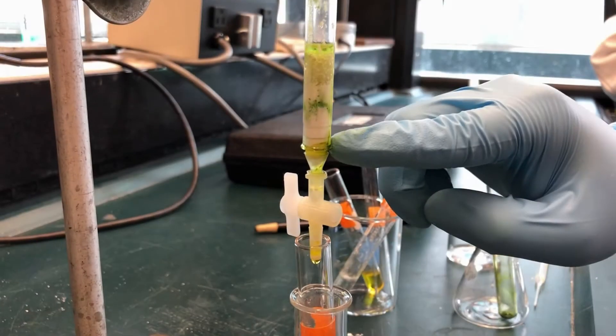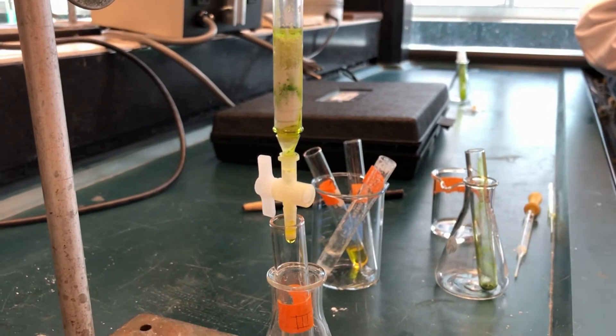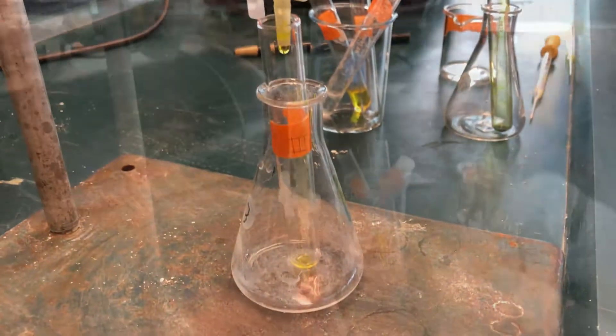Here you can see our green band is moving down. Once the green band is almost at the bottom, switch to test tube 4 to collect the green pigment.